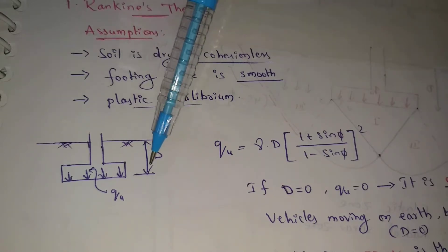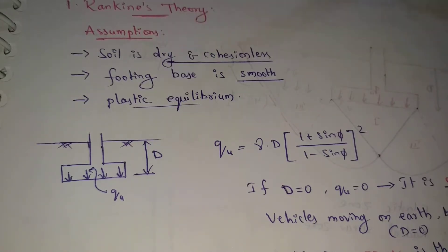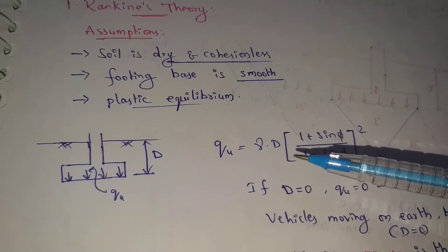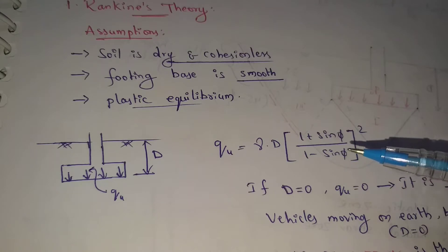Otherwise, this footing has depth capital D. Here, ultimate bearing capacity of soil equal to gamma d into (1 plus sin phi by 1 minus sin phi) whole square. This is the formula.